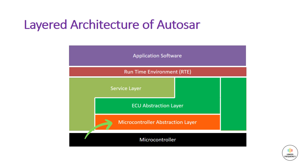The MCAL layer provides the following functionalities: first, initialization and configuration of the hardware peripherals; second, low-level access to the hardware peripherals; third, interrupt handling; and last, basic error management. Moving on to the next middle layer, that is the ECU abstraction layer.